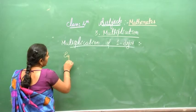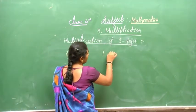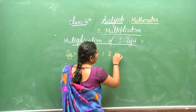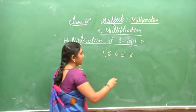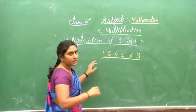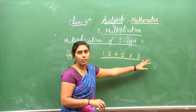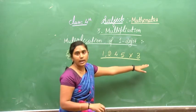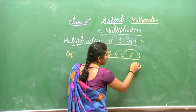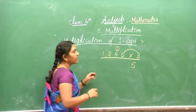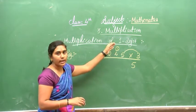Let's take an example first, then we will do the exercise. Take the 4-digit number 1,245 multiplied by 3. Always start from the right. 3 times 5 is 15 — write 5, carry 1. Circle the carry so we are not confused about which is the number and which is the carry.